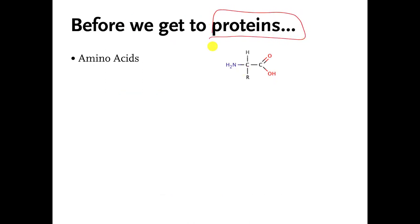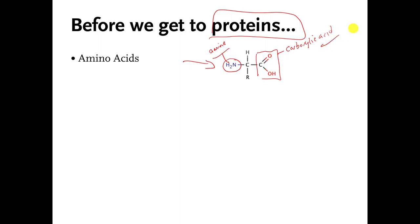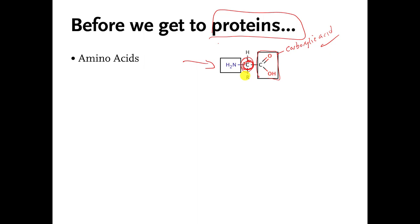This chapter is on protein molecules, but before we get to protein molecules, we have to talk about a kind of molecule called an amino acid. This is a generic amino acid molecule, and all of the amino acid molecules I'm going to talk about in these lectures have these features in common. They have an amine functional group, and they also have a carboxylic acid functional group. Those two functional groups are why amino acids are called amino acids — because they have an amine and they have an acid functional group. This carbon atom in the middle has a special name: it's called an alpha carbon.